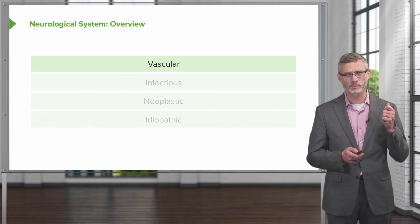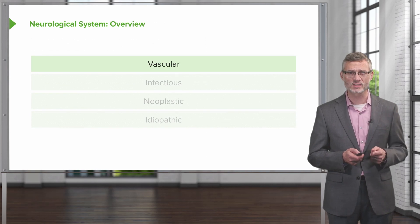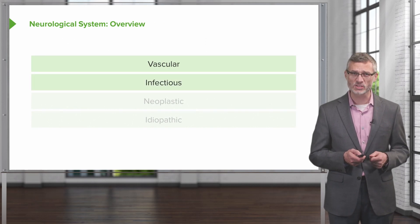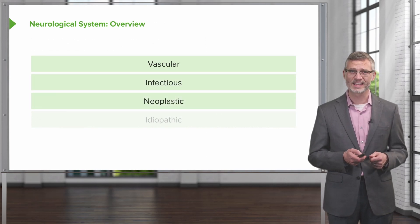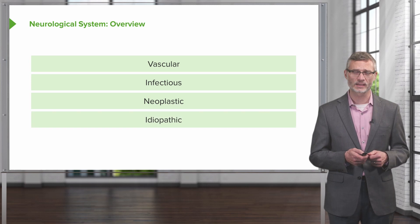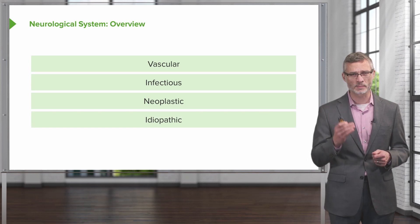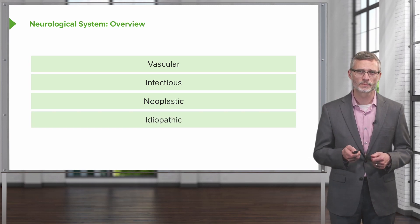In general, we think about vascular causes, infectious, neoplastic, and idiopathic. Let's go through some examples of each.